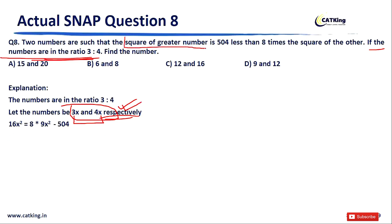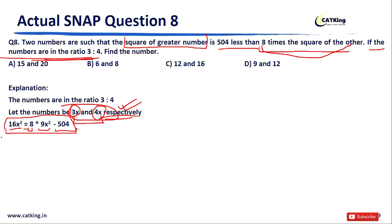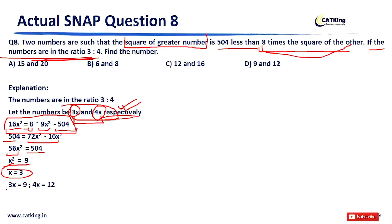Square of the greater number is 16x². This equals 8 times the square of the other number minus 504, i.e., 8 × 9x² − 504 = 72x² − 504. So 16x² = 72x² − 504, giving 56x² = 504, thus x² = 9 and x = 3. The two numbers are 3x = 9 and 4x = 12. Hence the correct answer is option D: 9 and 12.